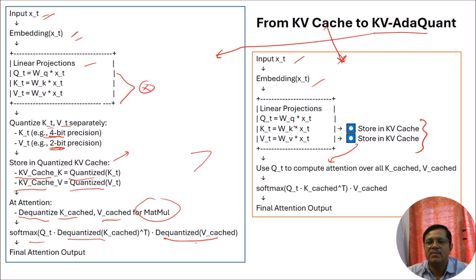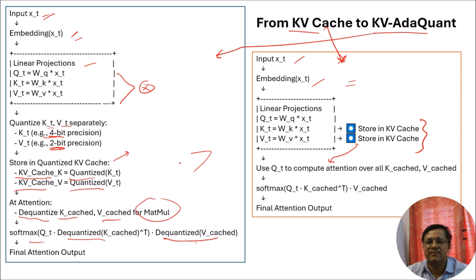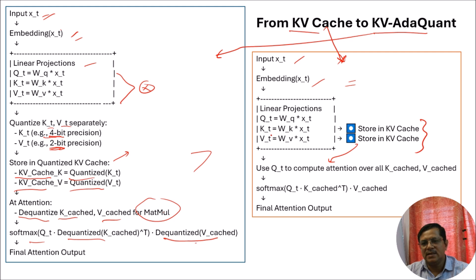We can say that traditional vanilla KV Cache is the base algorithm. Similarly, there are many different varieties like hierarchical KV Cache and others. But the purpose of applying such caching mechanisms with vanilla self-attention is just to reduce time complexity and improve the efficiency of the system. I hope that you have understood how such systems work. Thanks for watching, see you next time.